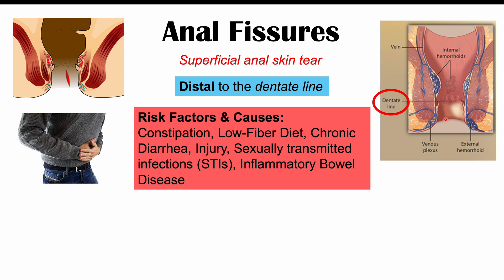There are multiple risk factors and potential causes for anal fissures. Some of the most important are constipation — long-term or severe constipation, especially associated with low fiber diets. Chronic diarrhea can also increase the risk, as irritant diarrheal stool can cause tears in the anal skin. Injury is another cause, including sexually transmitted infections and inflammatory bowel disease, among others.